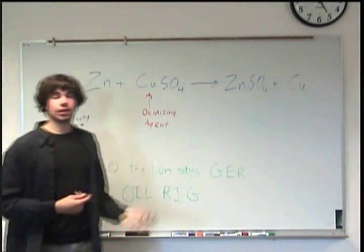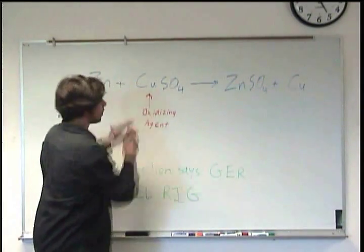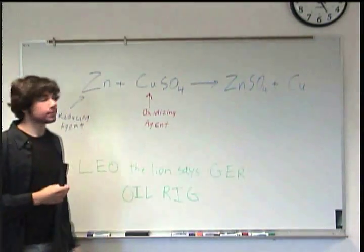So that's basically all it is. You have the flow of electrons going from one thing to another. Electrons from zinc to copper, so that way the zinc is bonded with the sulfate, and the copper is all by itself now.